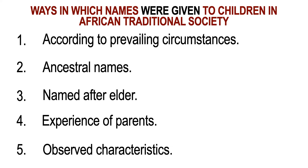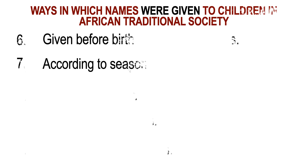Names were given during adolescence to describe observed characteristics of the young man or woman. The name would also be fixed before the child is born, and there were names given according to the season of birth.